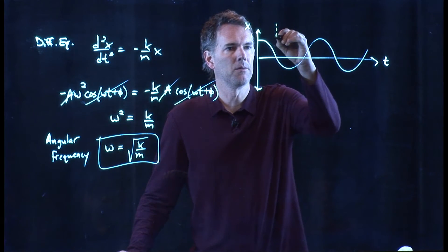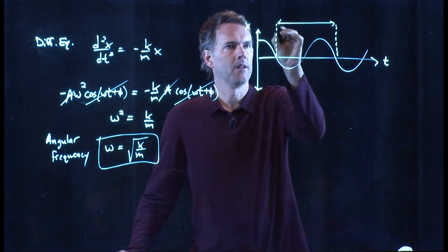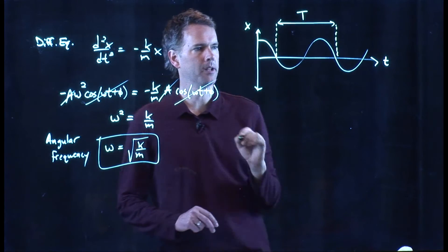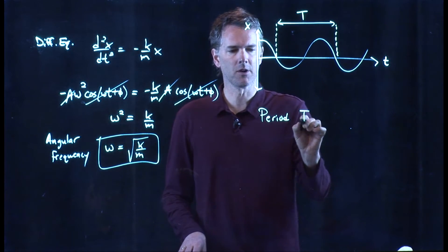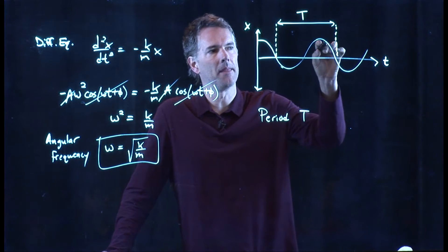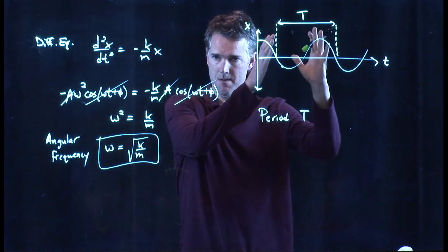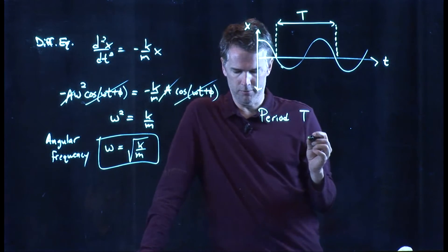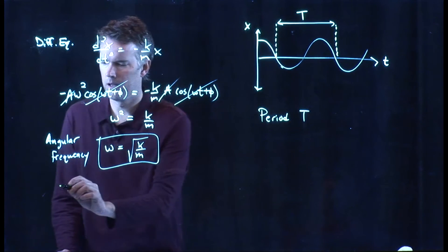This region from there to there has a very characteristic name. It is called the period T. And that's where the function is going to start repeating itself. Right? We went down through zero, we came back up, and then we went down through zero again. And so that amount of time is the period.